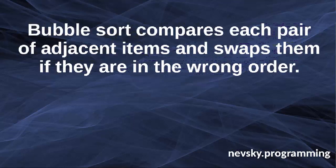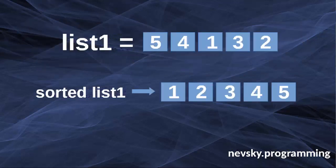Bubble sort works in a way that it compares each pair of adjacent items and swaps them if they are in the wrong order. For example, suppose that we have a list with five elements: 5, 4, 1, 3, and 2. In this example we want to sort this list in ascending numerical order to get the solution list which is going to contain numbers 1, 2, 3, 4, and 5. Bubble sort works by comparing adjacent elements and swapping them if they are in the wrong order.